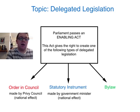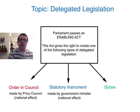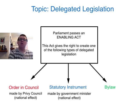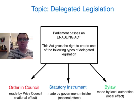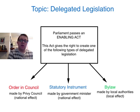Statutory Instruments are made by a Government Minister responsible for a particular department. So for example it could be the Minister for Transport, if it were a Statutory Instrument concerning detailed regulations about transport. And again, it will take national effect — whatever law is made by that Minister will affect everyone in the country. By-laws, on the other hand, are made by local authorities, so whatever law they create will only affect citizens within their local area.